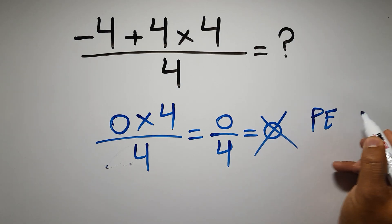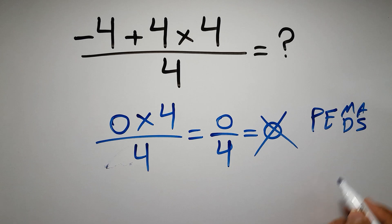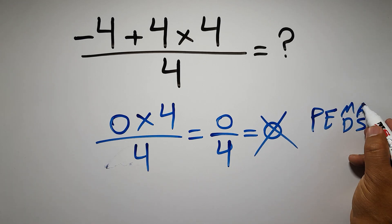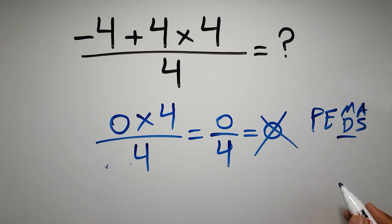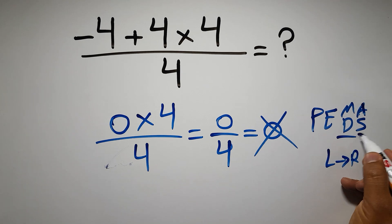...have to do parentheses, then exponents, then multiplication or division, and then addition or subtraction. Remember that multiplication and division have equal priority and we have to go from left to right, and the same applies to addition and subtraction.